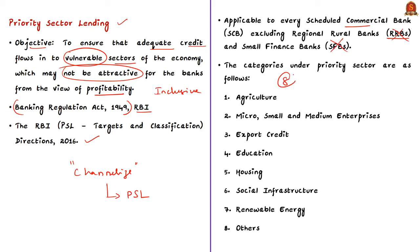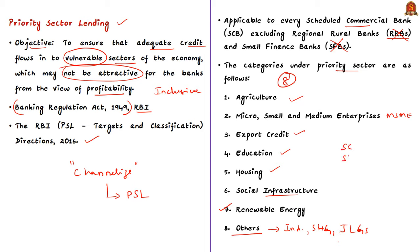At present, there are eight categories which are called as priority sectors. These are agriculture, MSMEs, export credit, education, housing, social infrastructure, renewable energy, and the last category is others. Under the others category, loans are provided to individuals and their self-help groups or joint liability groups, where the individual borrower's household annual income should not exceed a specified amount set by RBI — this is to channelize money to low-income households and distressed persons other than farmers. Loans are also sanctioned to state-sponsored organizations for scheduled castes or scheduled tribes for the specific purpose of purchase and supply of inputs and for the marketing of the outputs of the beneficiaries.